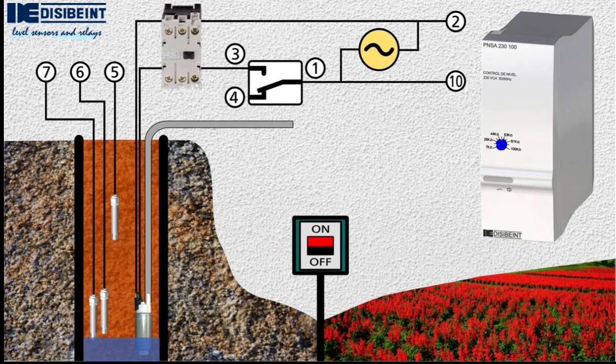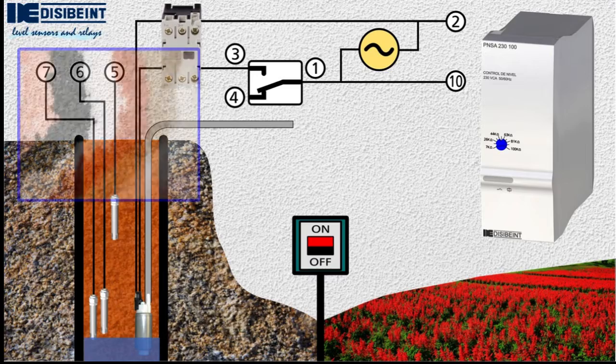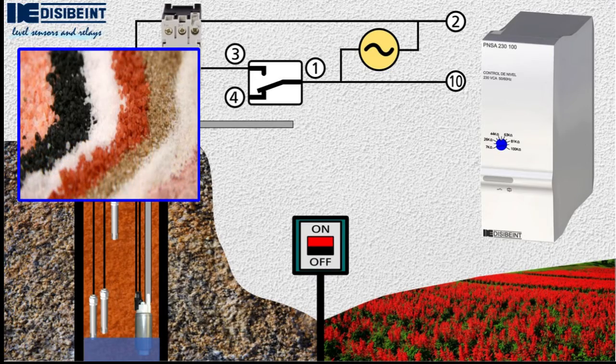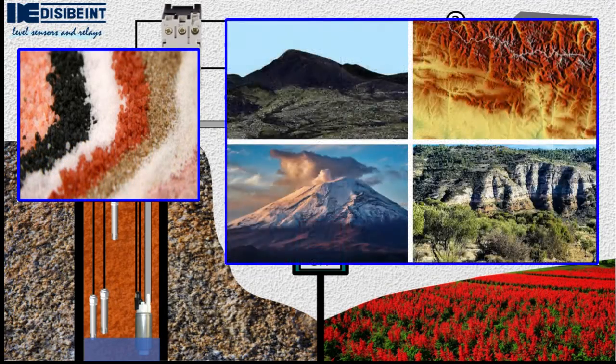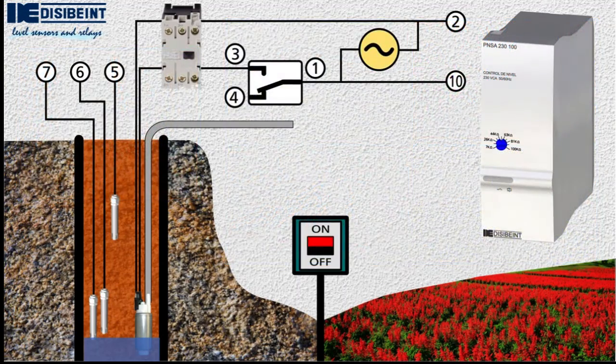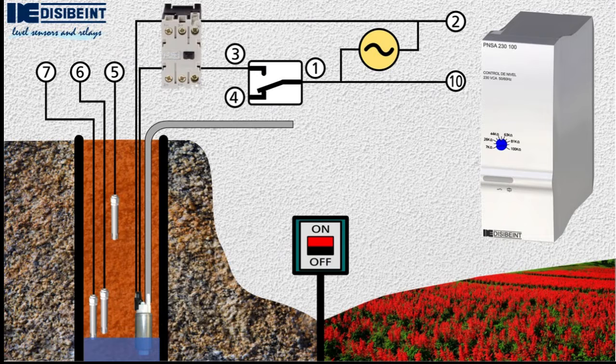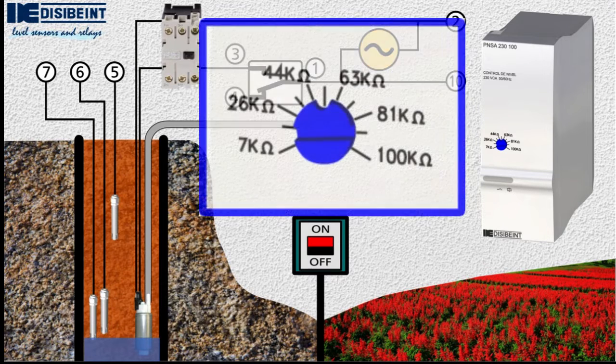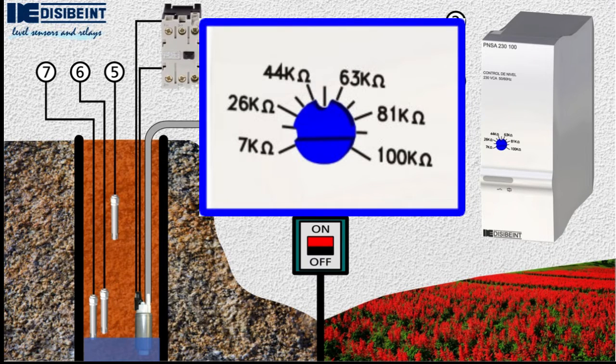In the case of well water, the conductivity can vary depending on the quantity and type of mineral salts that make up the subsoil derived from the geographical area or the orography of the place. The measurement range of the PNSA relay covers practically all of this type of water.